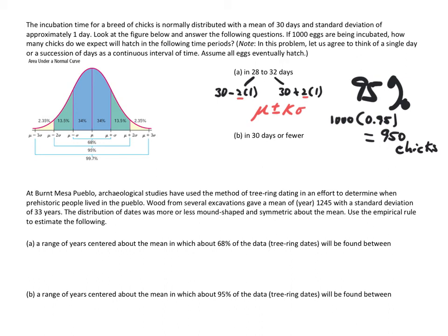Part B: how many chicks do we expect to hatch in 30 days or fewer? Well, 30 days is the average or the mean, so in that amount of time or fewer, that's automatically 50%. So 1,000 times 0.50 — or simply half of a thousand — we can expect 500 chicks to hatch.